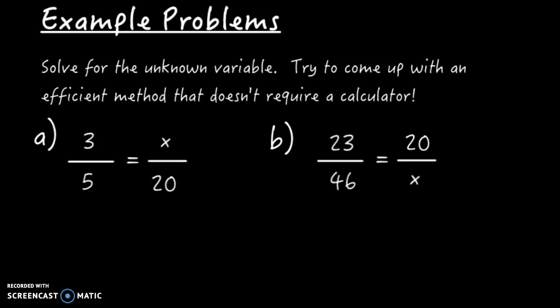So in problem A, it says 3 over 5 equals x over 20. This one has a really nice scaling factor from left to right because 5 times 4 equals 20. So we can just use that scaling factor up here. 3 times 4 equals 12, and we know that x equals 12.